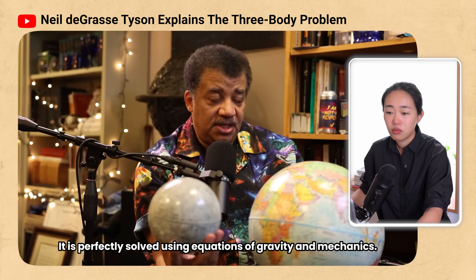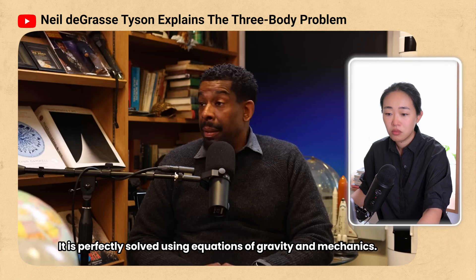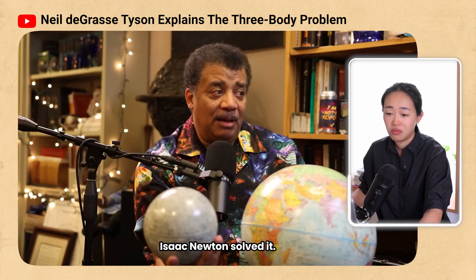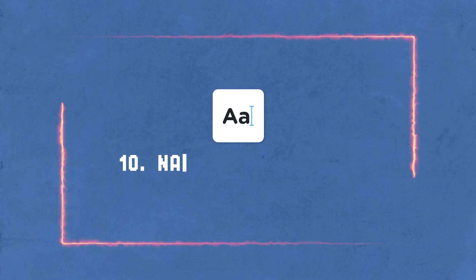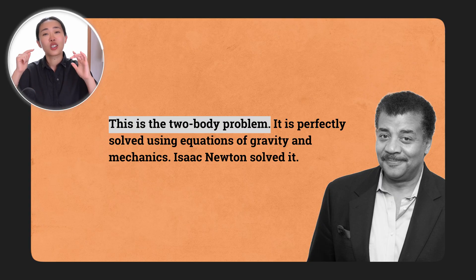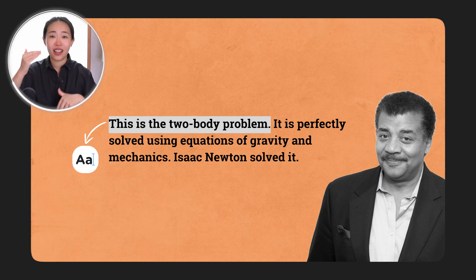Neil says: "This is the two body problem — it is perfectly solved using equations of gravity and mechanics." Isaac Newton solved it. Framework nine or ten: naming the concept. He's naming this "the two body problem" — now everything ties together. When you do presentations at work, you can choose to name the concept earlier. In a casual, conversational, entertaining video he does it later to build excitement, but at work you might be more direct: first introduce the three body problem, then say to understand it we need to understand the two body problem, and then go into the details.